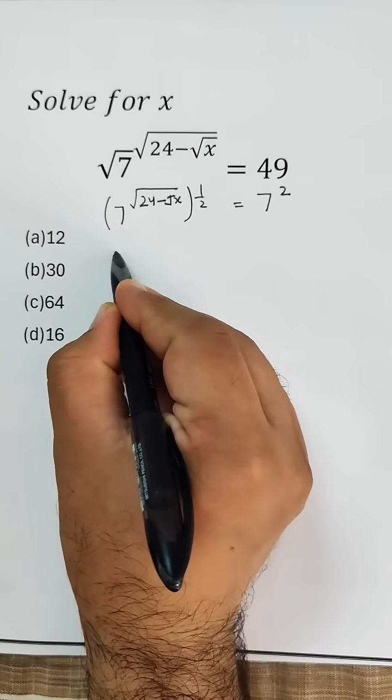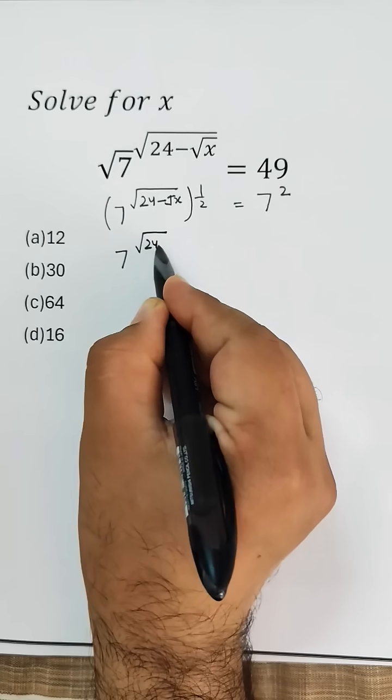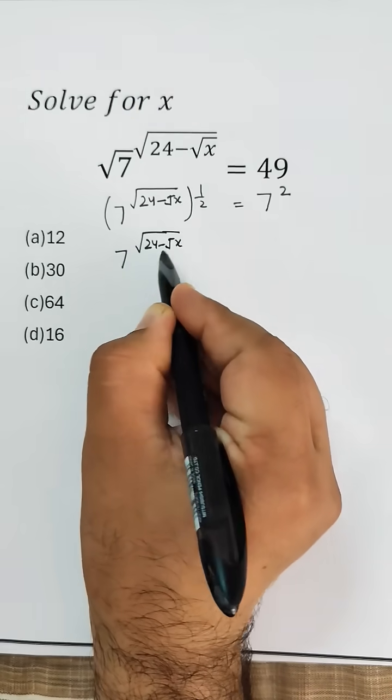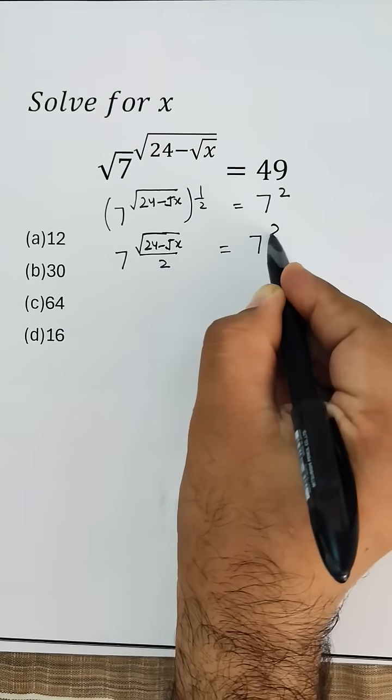Further, it can be written as 7 to the power of square root of 24 minus root x over 2, equals 7 to the power 2.